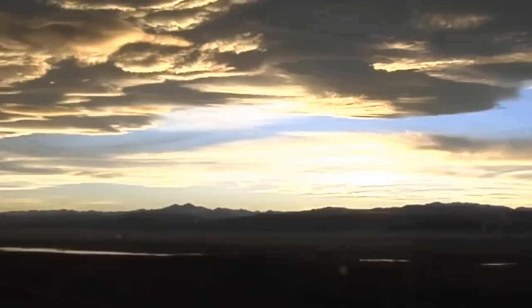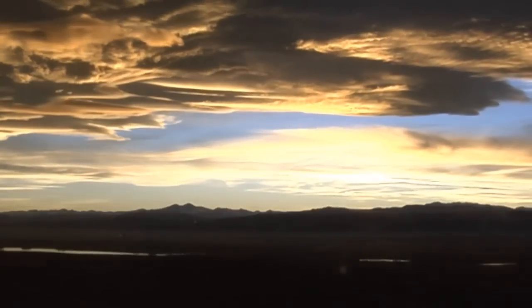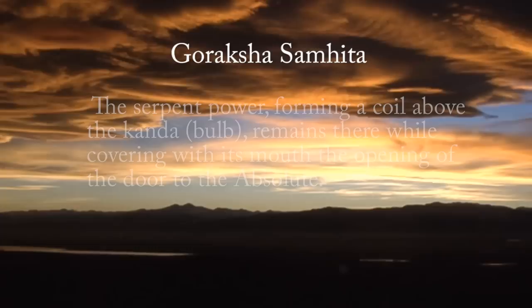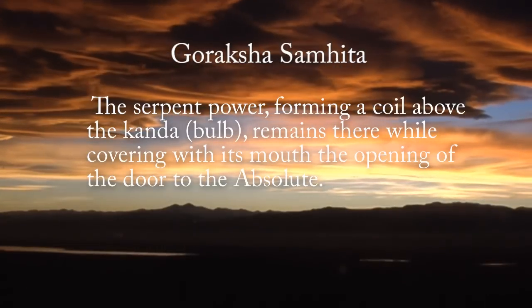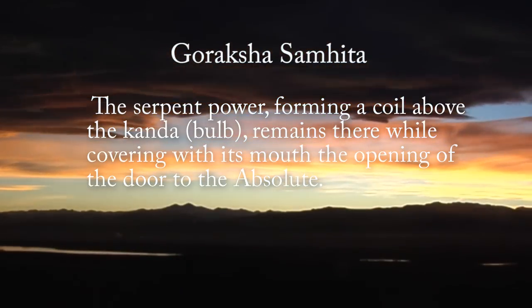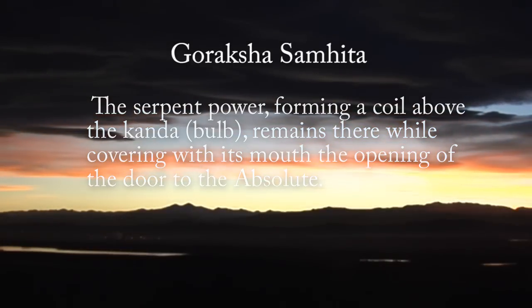The ancient text on Hatha yoga, Gauraksha Samhita, describes this process very clearly. The serpent power, forming a coil above the kunda, remains there while covering with its mouth the opening of the door to the Absolute. Through that door the Absolute can be reached.